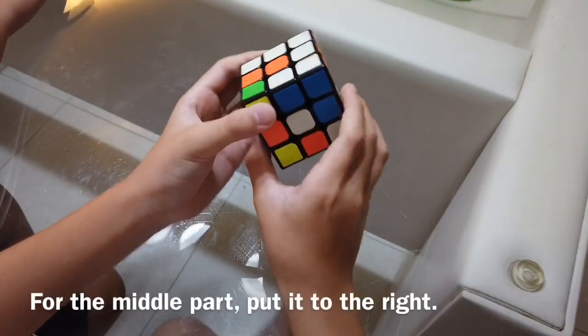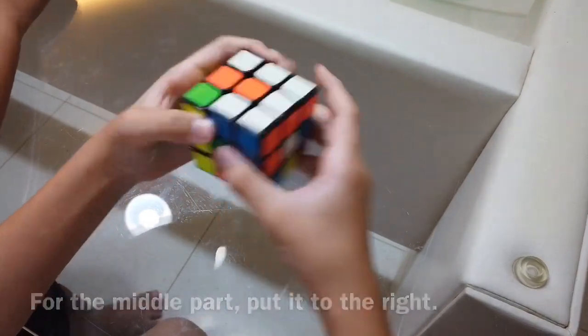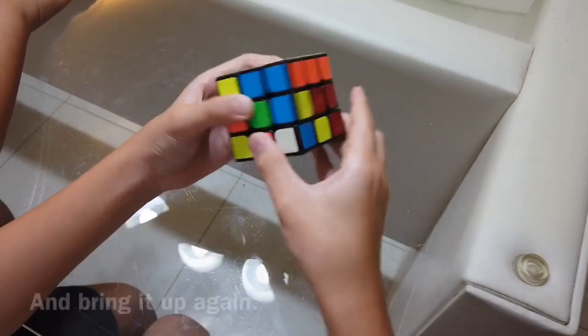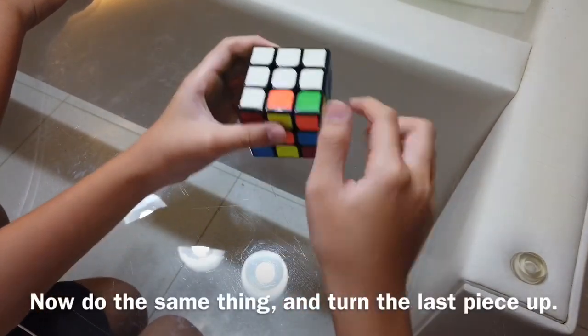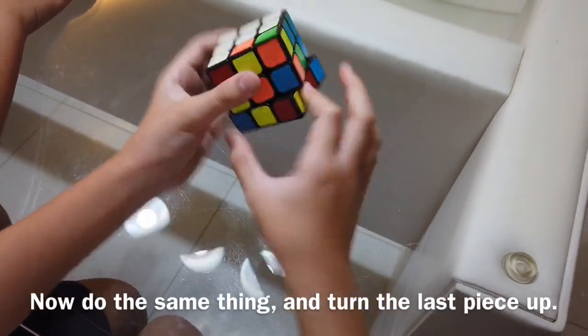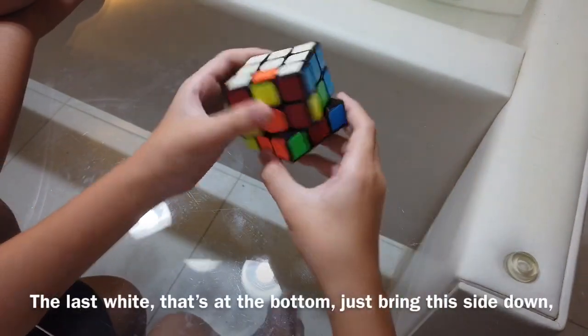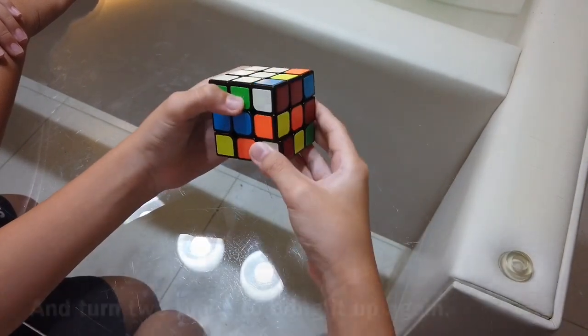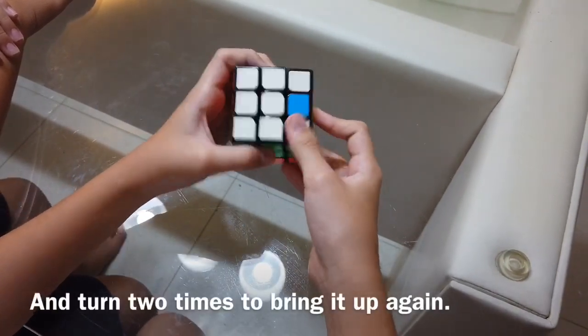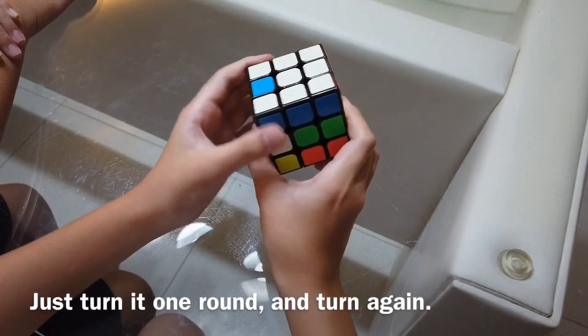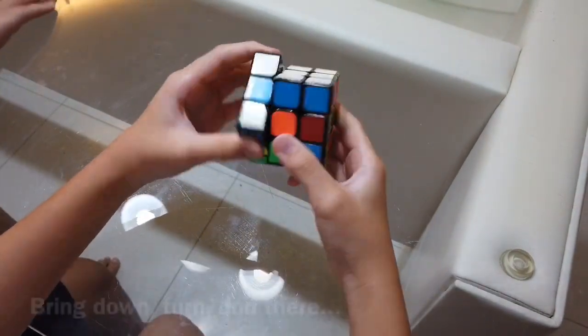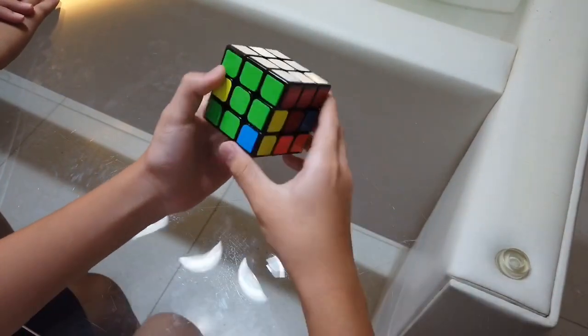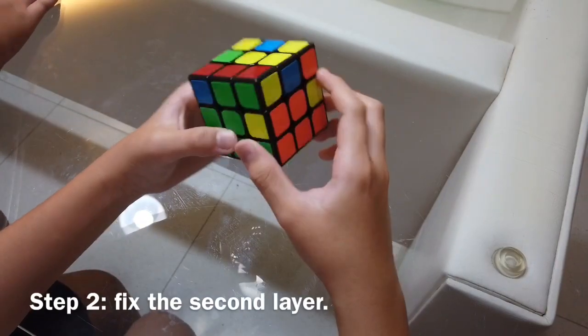For the middle part, you just put it to one side, which is on the right. Then bring it down. Turn to the left and bring it up again. It's just very easy. Do the same thing. For this one which is at the bottom, we just bring this down. Turn three times. Bring it up again. Just turn it up again. Bring it down. Turn. And there, we have solved the first layer. Oh my gosh. That is so cool.